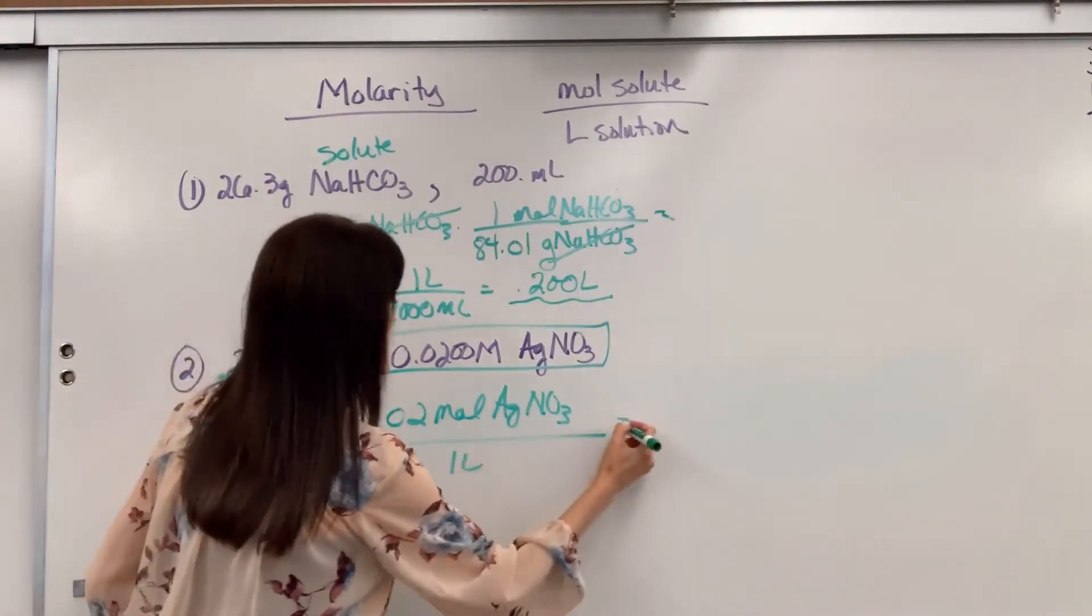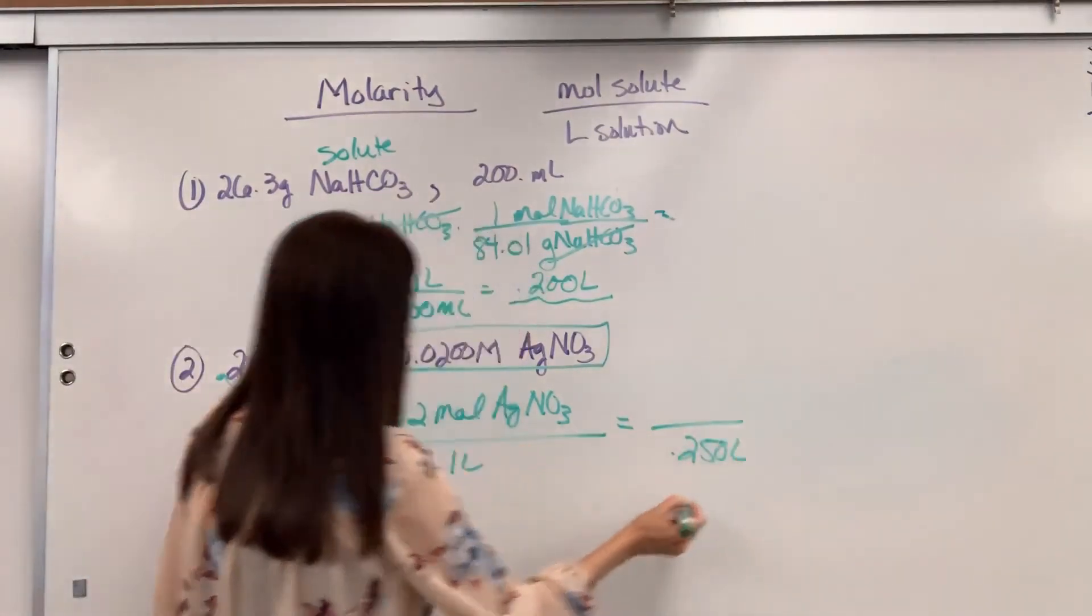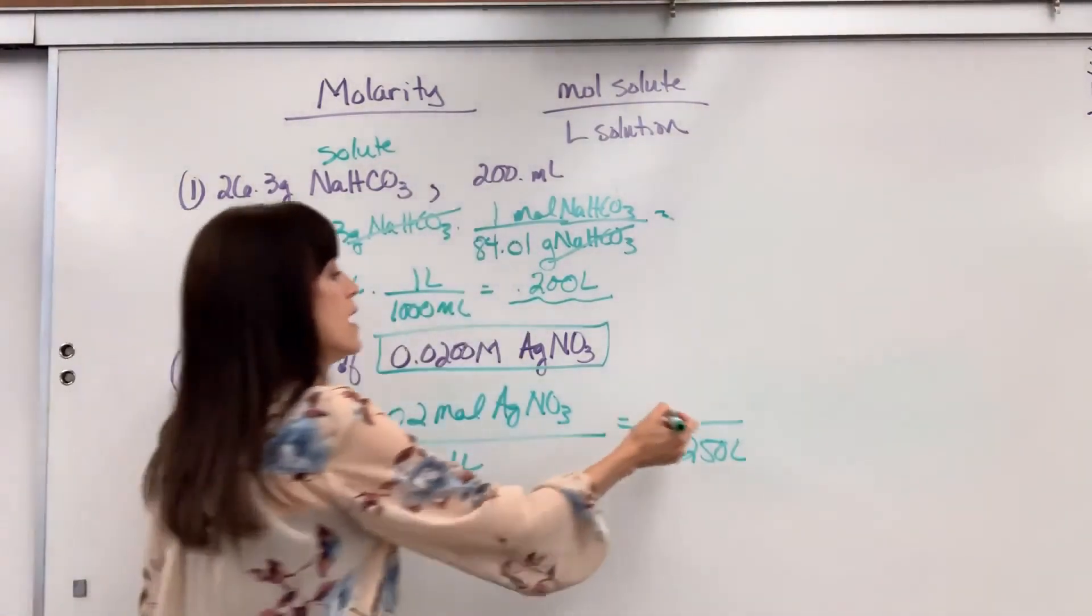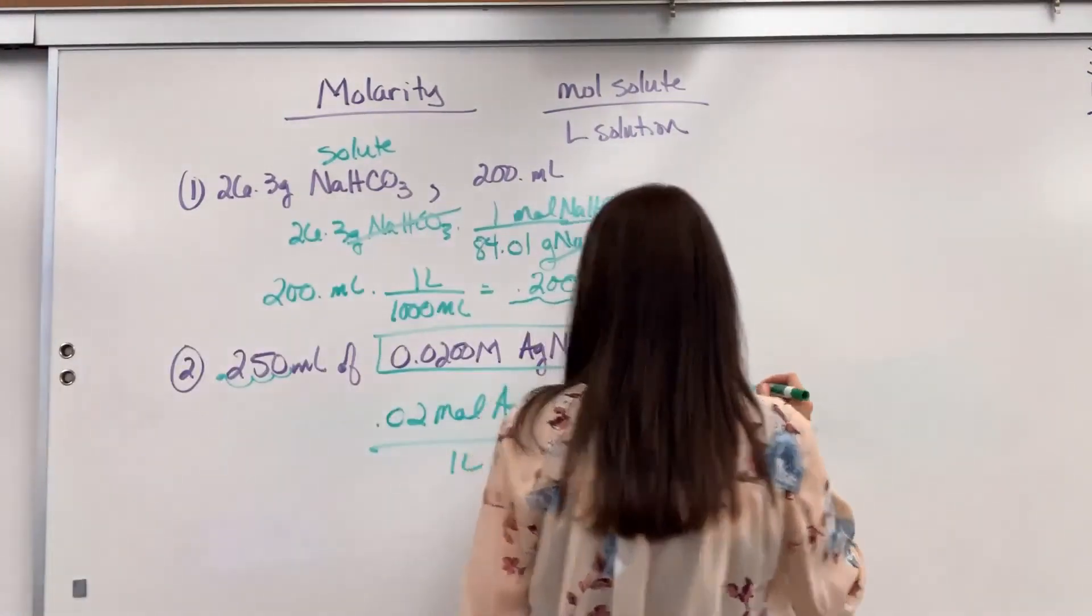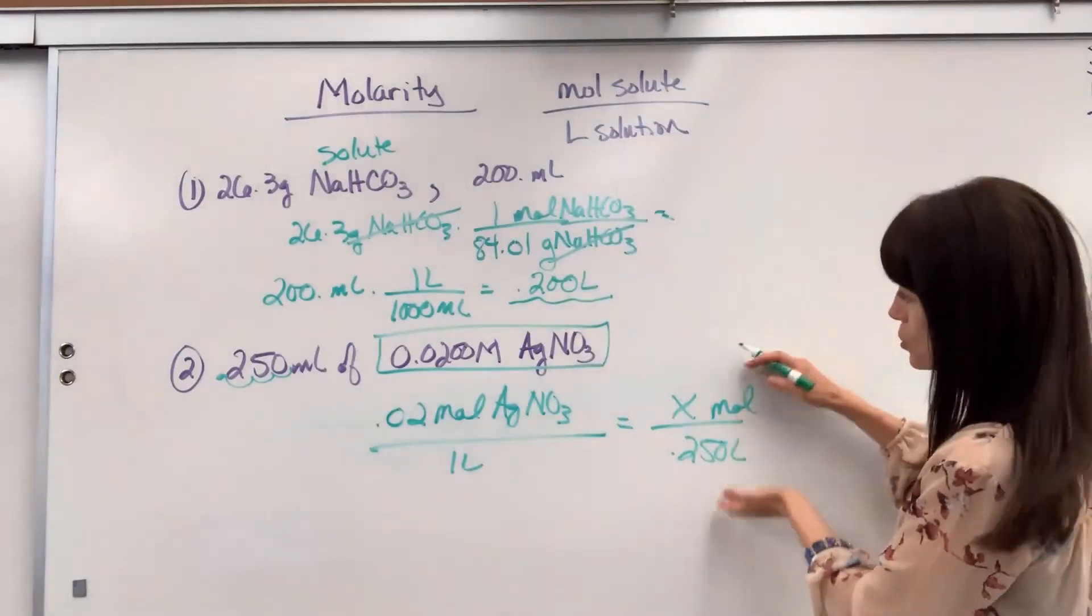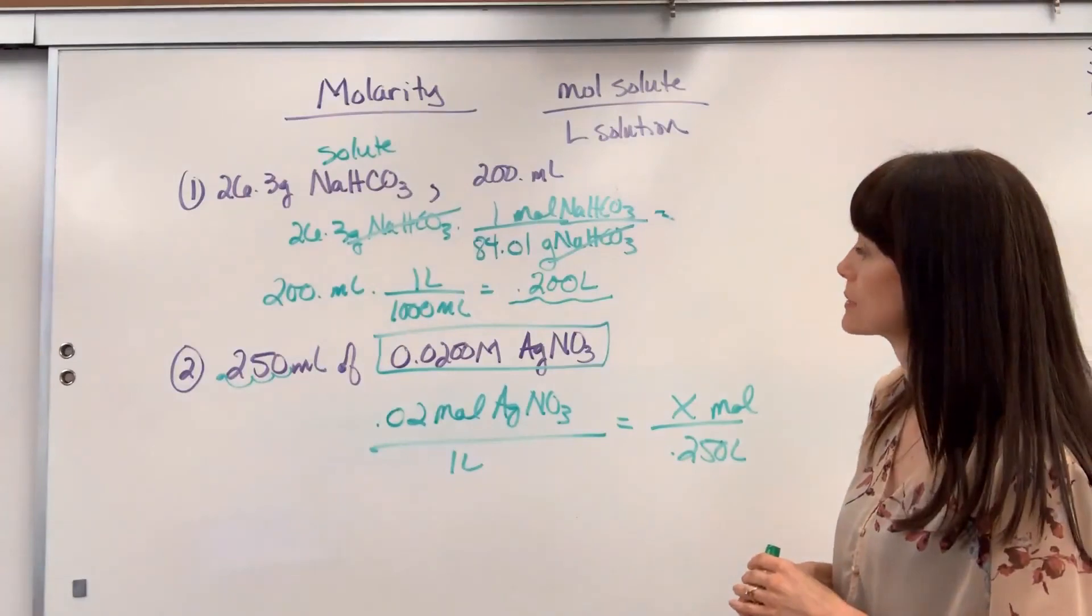So this is a ratio, 0.02 moles of the silver nitrate for every one liter. Well, if I only want 0.250 liters, right, the 250 mils, was the moles right there. So that would be your unknown number of moles, because this is just a ratio. And then you could go from moles to grams. That totally works.